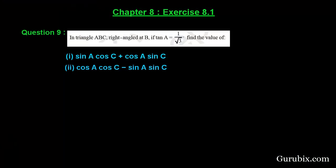Welcome friends. Let us solve question number 9 of exercise 8.1 of chapter 8. The question says: in triangle ABC, right angled at B, if tan A is equal to 1 over square root of 3, find the value of: first, sin A cos C plus cos A sin C; second, cos A cos C minus sin A sin C.